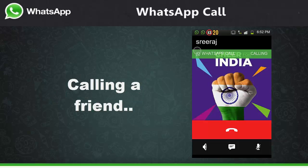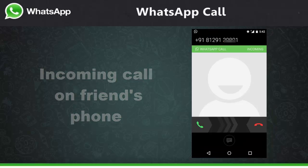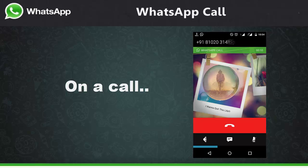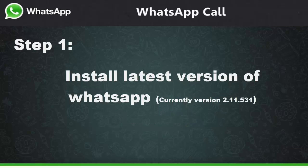This is how it looks while calling a friend, and your friend receives the WhatsApp incoming call. Now we are going to see how to activate this call feature on your WhatsApp. For that, as step one, you have to install the latest version of WhatsApp.